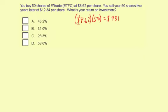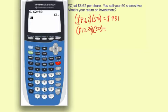Okay, now you need to figure out how much money you made when you sold the shares. So it's going to be $12.34 times 50 equals $617.